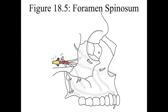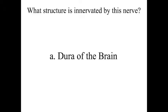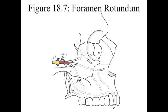Number 5 is foramen spinosum. Number 6 is the meningeal nerve. This nerve enters the skull through the foramen spinosum and innervates the dura of the brain. Number 7 is the foramen rotundum. This is the foramen through which the maxillary branch of the trigeminal nerve exits the skull.